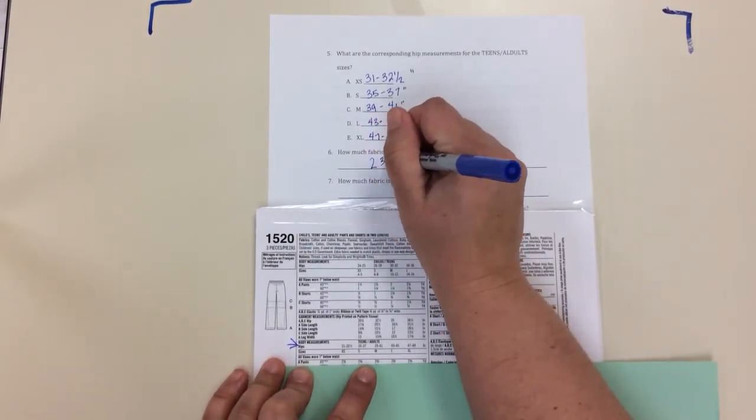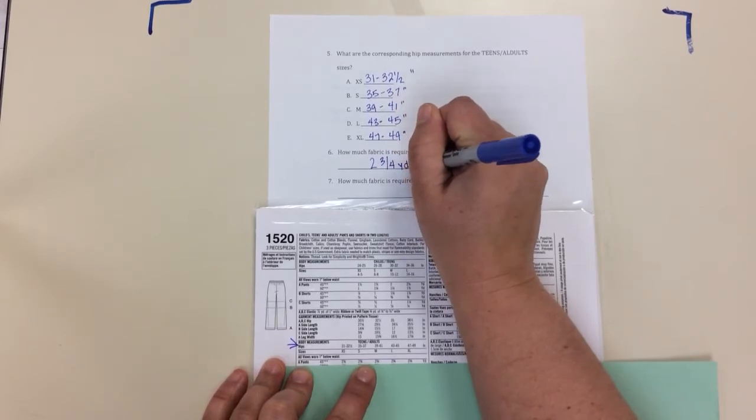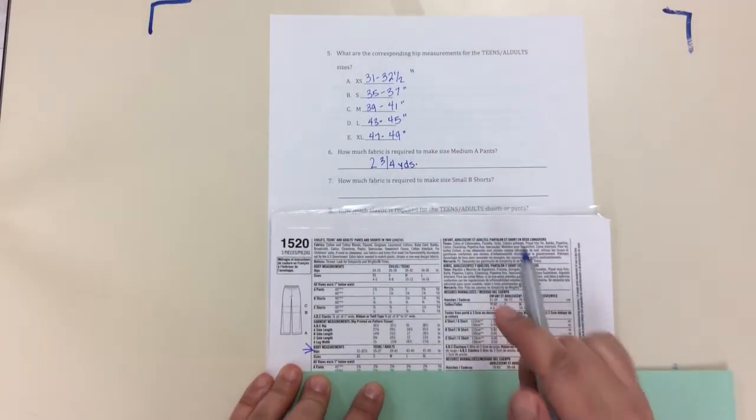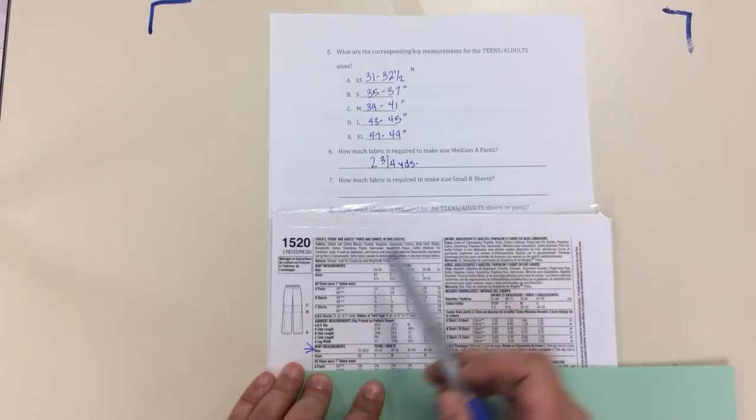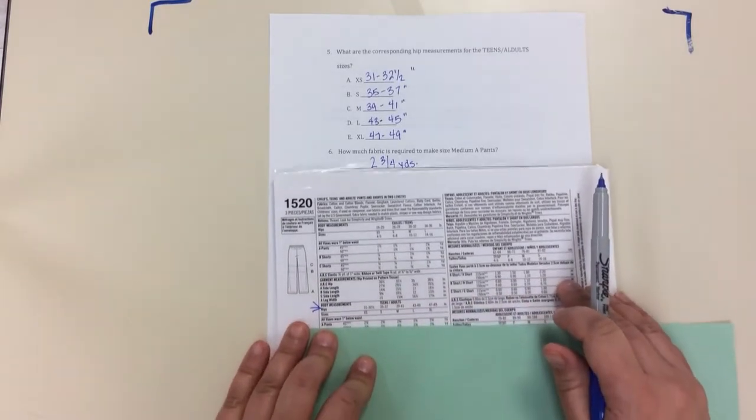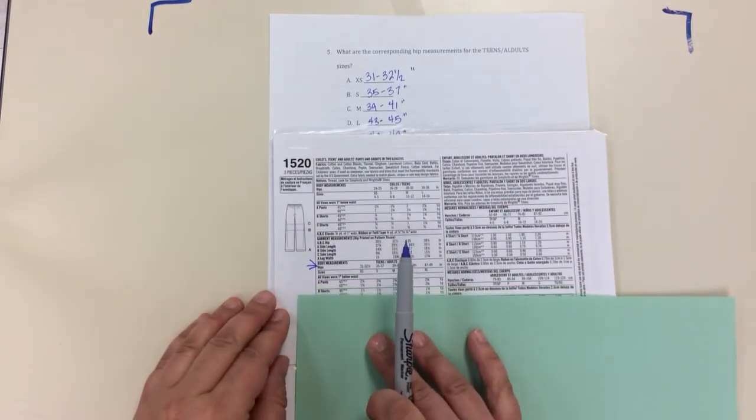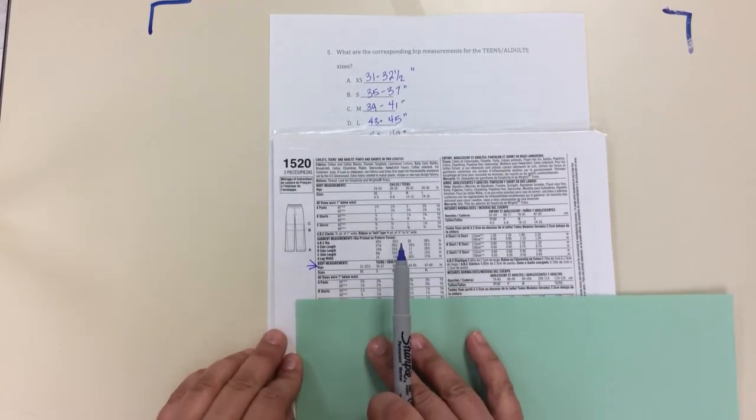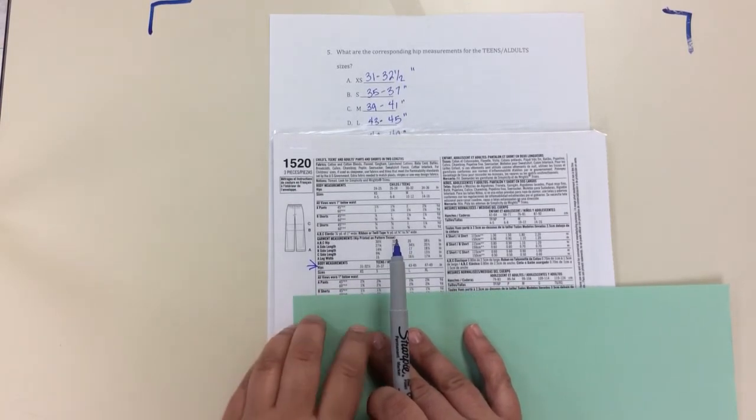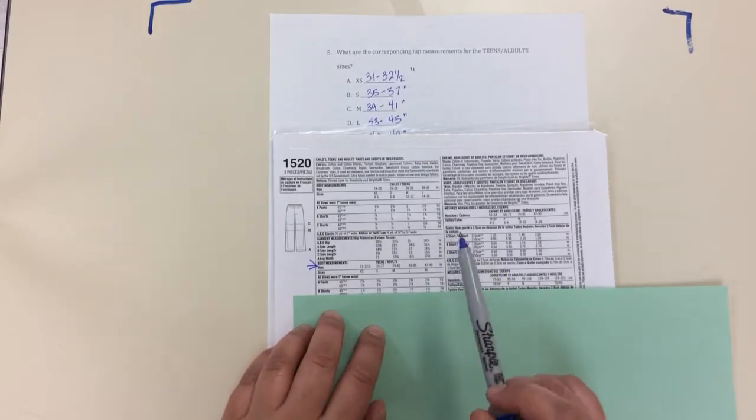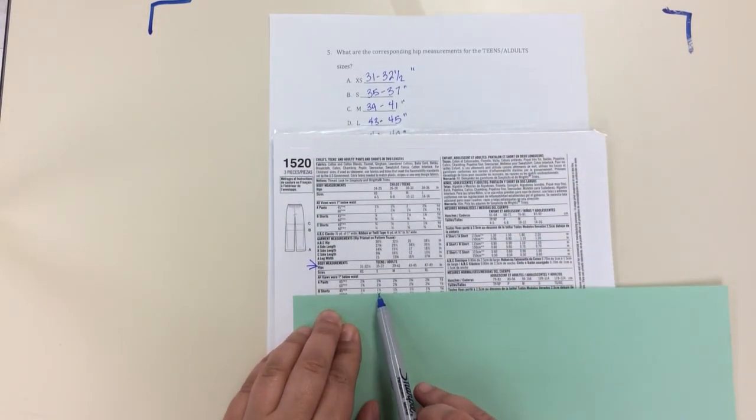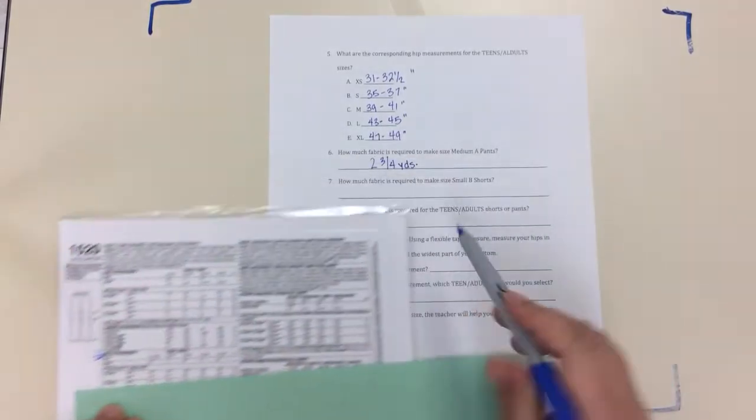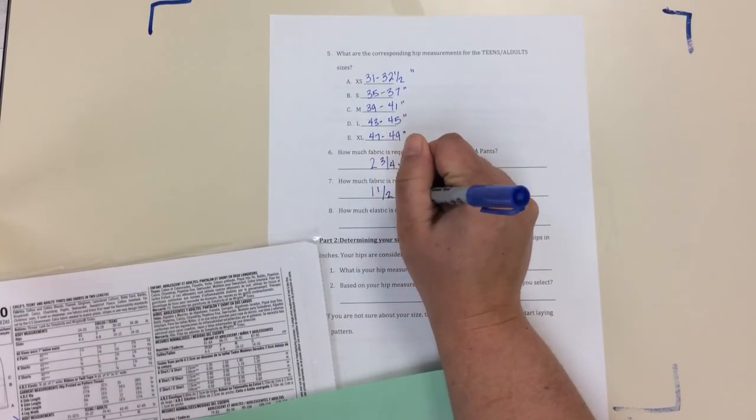So try to follow along on your envelope as well. The next one is how much fabric is required to make size small B shorts. So remember B are those longer shorts. If I come up here, I'm going to keep coming down to B shorts. Go ahead and look at the 45 inch wide fabric. And let's see what size I want to make - small. So if I come over here, look at small, you can see how many yards is that - one and a half. So we can write down one and one half yards.